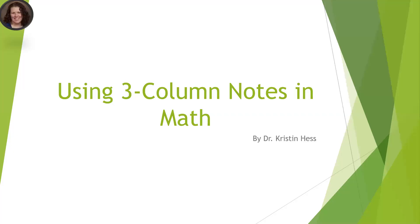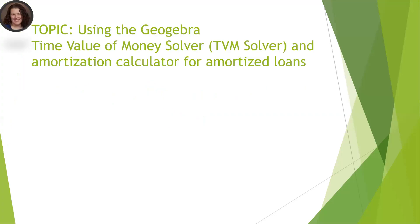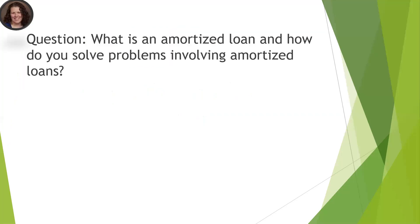Hi, this is Dr. Hess. Today we're going to use three-column notes. We're going to talk about amortized loans. We'll use the time value of money solver on GeoGebra to help us out with this. The question I want you to think about as we're discussing this is: what is an amortized loan and how do you solve these problems?